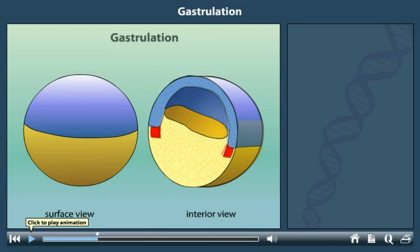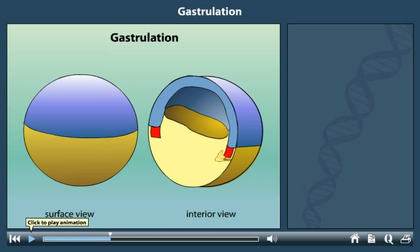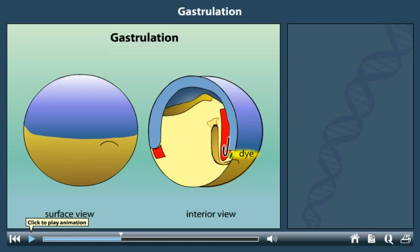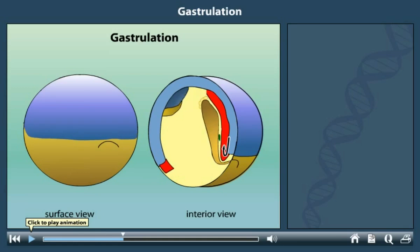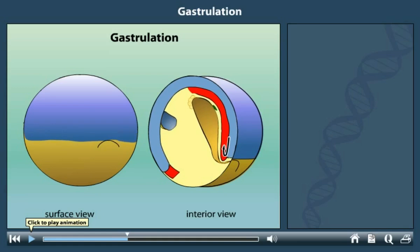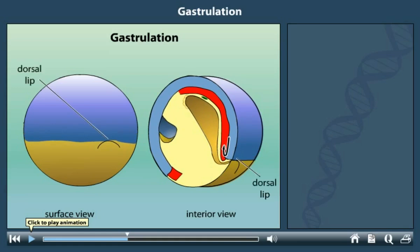At the beginning of gastrulation, a few surface cells called bottle cells move into the interior of the embryo, followed by other surface cells. We can track the movement of cells into the embryo if we add dye to a few surface cells. The movement of cells into the embryo creates a lip called the dorsal lip, over which sheets of cells continue to move inside. At the same time, the ectoderm extends around the embryo surface in a process called epiboly.